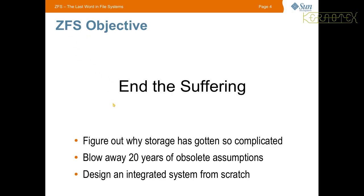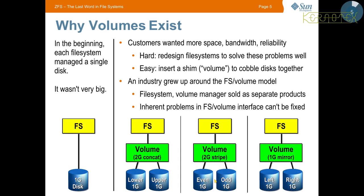The reason why they started this project was to end the suffering — figure out why storage got so complicated, blow away 20 years of obsolete assumptions, and design an integrated system from scratch. They asked: why do volumes exist? In the beginning you had a small disk and put a file system on top. But then you want more space and start adding more disks. Customers want more space, bandwidth, and reliability, and it's hard to design existing file systems to solve these problems well, so the easy way was to insert a shim — a volume — to cobble disks together.